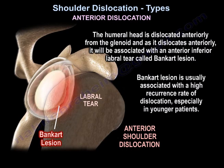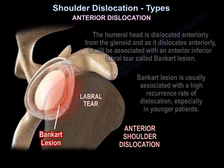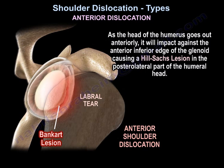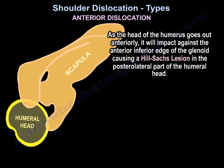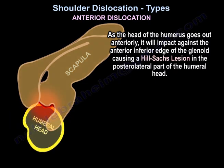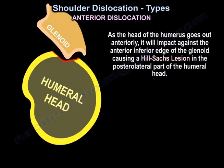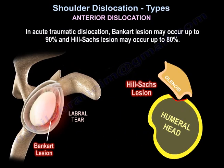Bankart lesion is usually associated with a high recurrence rate of dislocation, especially in younger patients. As the head of the humerus goes out anteriorly, it will impact against the anterior inferior edge of the glenoid, causing a Hill-Sachs lesion in the posterolateral part of the humeral head. In acute traumatic dislocation, Bankart lesion may occur up to 90% and Hill-Sachs lesion may occur up to 80%.